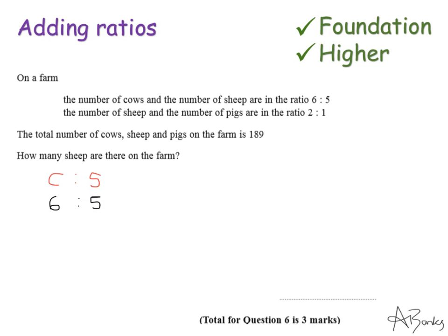And then they've also given me the ratio of sheep to pigs. So I'm just going to add pigs on the end here and write this ratio underneath which is 2 to 1. So that's the information that they've given me in the question and I'll now need to form a new ratio of cows to sheep to pigs.